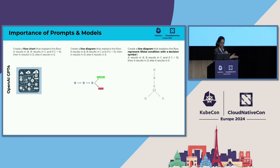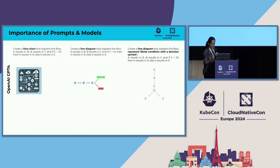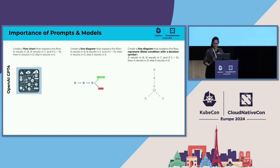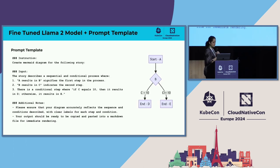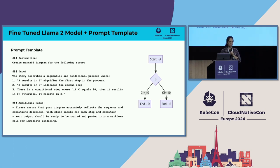For instance, I used ChatGPT to create a flowchart and it gave me some random image. Then I changed the prompt to create a line diagram and it showed something different, but still not to expectations. The last one — I changed the prompt again with more context of what I really expect out of AI, and this time it had some meaningful outcome. Let's compare this with Llama 2 7B. Across all these prompts, it was not able to generate anything meaningful. But when we have a fine-tuned Llama 2 along with a proper template, we were able to get a better response. What this signifies is that we need a good prompt and a fine-tuned model which is very domain-specific.